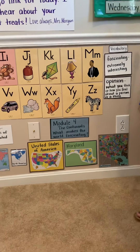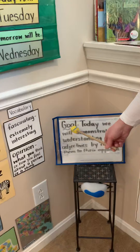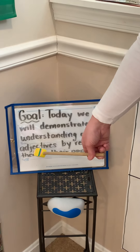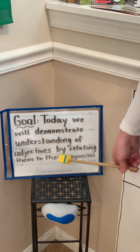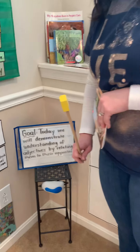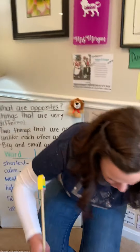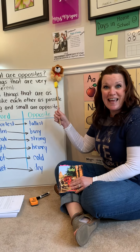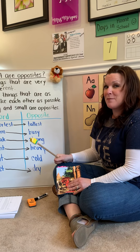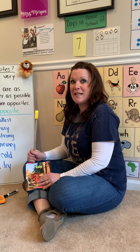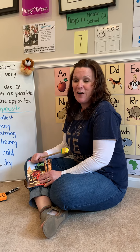We're going to think about our learning goal for this lesson today. Today we will demonstrate understanding of adjectives or describing words by relating them to their opposites. I'll tell you what opposites are in just a second. So let's have a seat here and look at our chart. Do you see our Lakeland lion? Remember I'm going to be popping him into different videos, so you be on the lookout and tell me where you see our Lakeland lion.